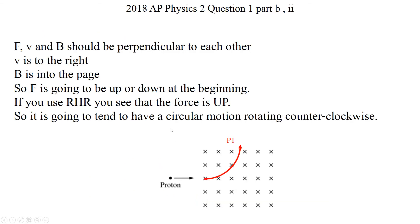And part two on part B, this time they're asking for the direction of the path of the proton when it enters to the region. So in that case, magnetic force, velocity and magnetic field, these are three vectors. And they must be perpendicular. Not must be, but the way that they work, they're perpendicular to each other.